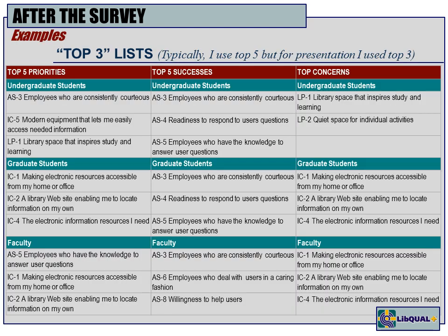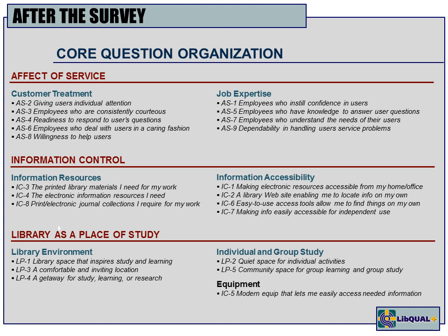I use a top-three list by priorities, successes, and concerns. The first column shows what is important to your user group, and you can see which priorities your library is succeeding at and which are areas of concern. I've broken the 22 core questions into six categories: customer treatment and job expertise under affect of service; information resources and information accessibility under information control; and under library as place — the library environment overall, individual and group study questions, and a question related to equipment.